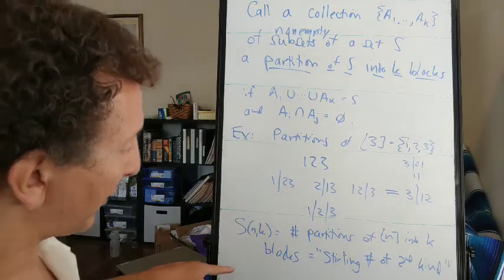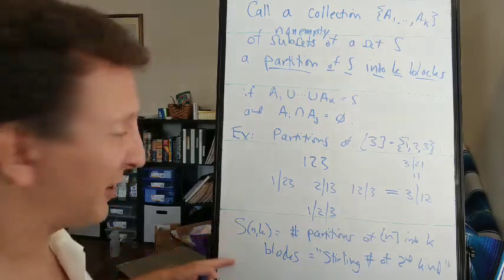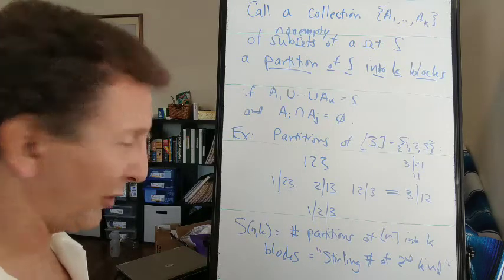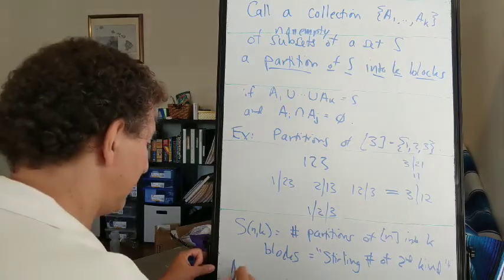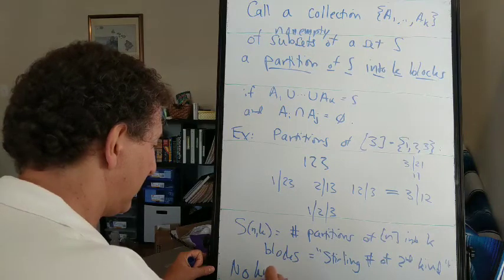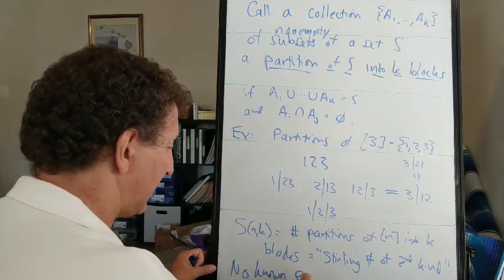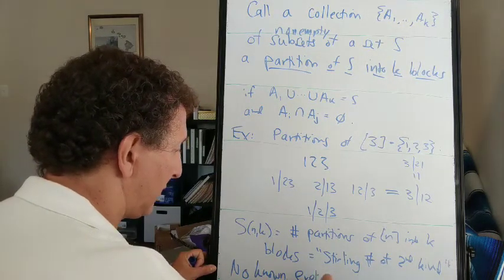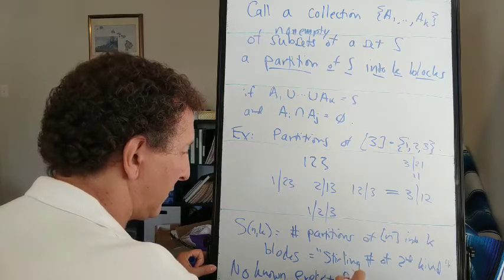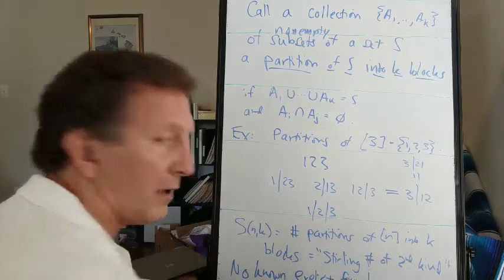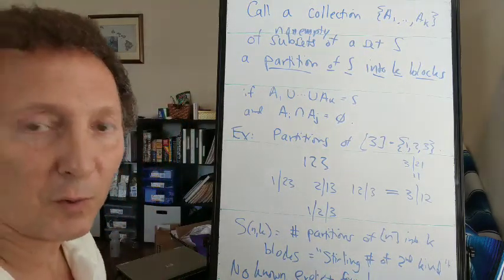Now, I don't have enough room to write a formula here, but that's okay because there's no known formula for the Stirling numbers of the second kind. So there's no known explicit formula.